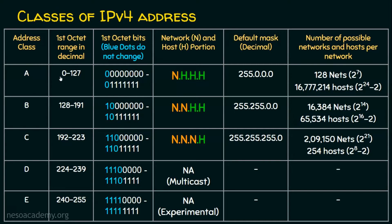How is this identified? When we take the first octet, the first bit is reserved. If it is 0, then it is class A. If the first octet in binary is 10, then it is class B. If it is 110, then it is class C. So in class A, out of 8 bits, 1 bit is reserved. In class B, 2 bits are reserved. And in class C, 3 bits are reserved.